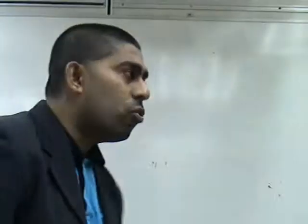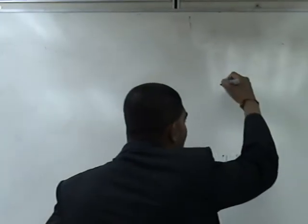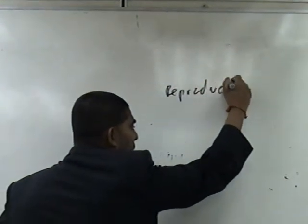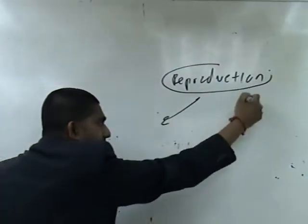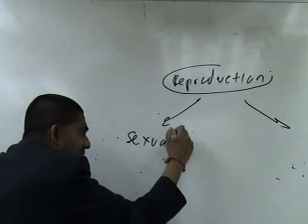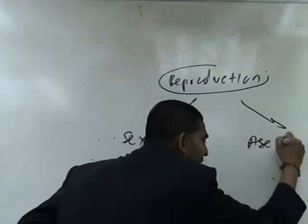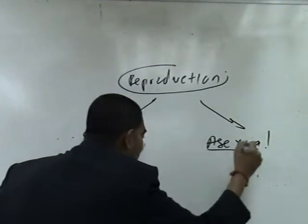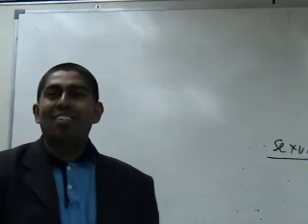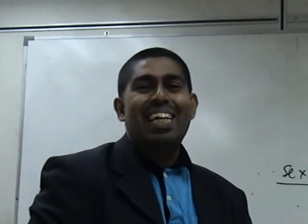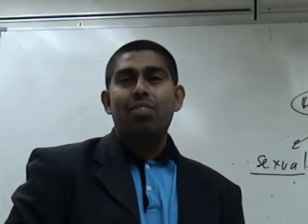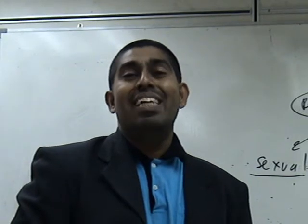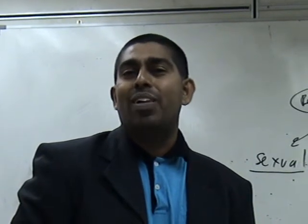I don't want to take much of your time — let's go straight to this chapter now. As I mentioned in the previous lesson, reproduction is broken into two parts: Sexual Reproduction and Asexual Reproduction. We are going to see what the differences are between the two. I will go through Sexual first, then we'll see how Asexual is the opposite of Sexual.